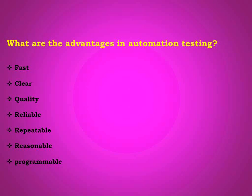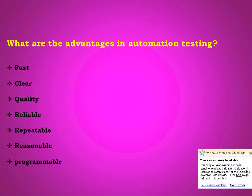Second drawback - tools are very expensive. When comparing with manual testing, automation is very costly; manual is the cheapest testing process. Third drawback - very important - we cannot automate all areas using tools. This is the main drawback: even using automation, we cannot automate all areas because tools have some limitations.